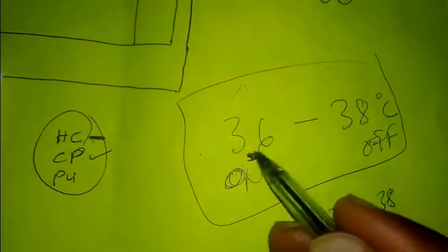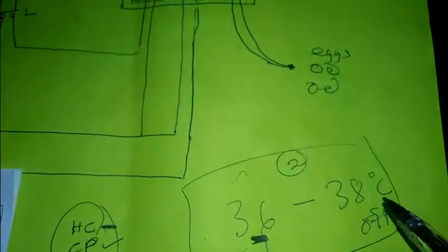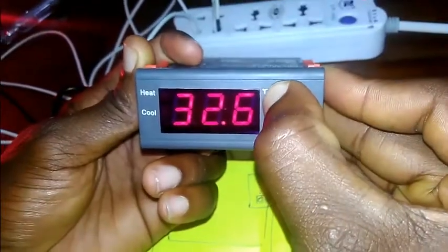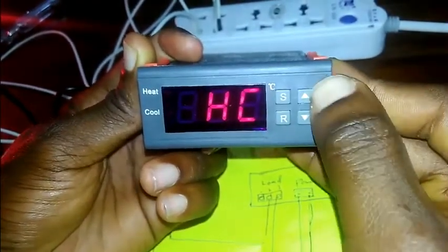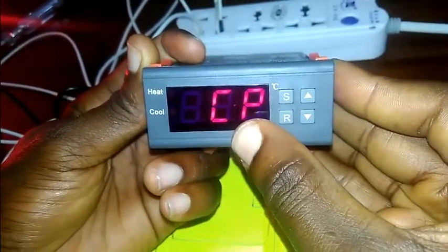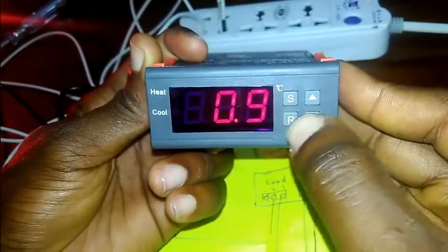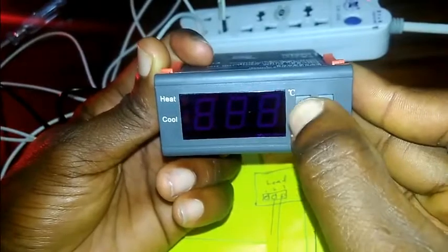The next thing we want to change is the CP. Now the CP is that difference, the temperature range. So over here it is two, that's 38 minus 36 is two. So you press long on the S, and then there's CP. Press S when it's at 0.9, but we want 2.0. Save with S.